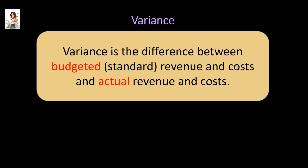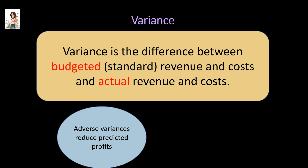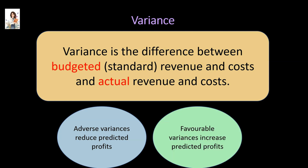Let us understand the meaning of the term variance. Variance is the difference between budgeted revenue and costs and actual revenue and costs. If the variance reduces predicted profits, it will be called an adverse variance. On the other hand, if the variance increases predicted profits, it will be called a favorable variance. Adverse variances are denoted with the letter A and favorable variances are denoted with the letter F.